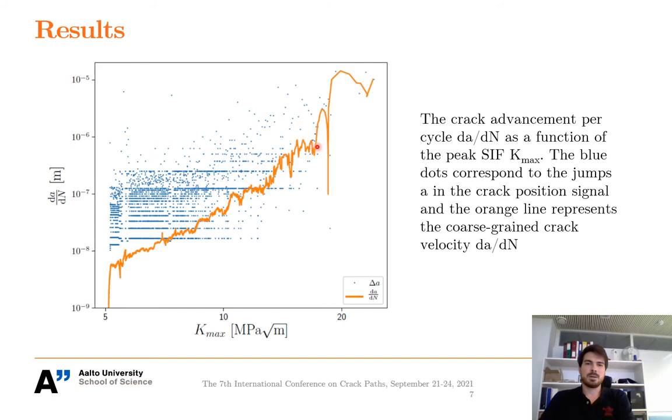The Paris curve dA over dN, the orange one, results from the crack advancement jumps delta A, which are the blue dots, through coarse graining. One should note that the lower values of dA over dN compared to delta A are due to the intermittency of the jumps, so that jumps do not occur between each image.